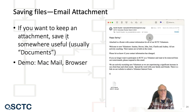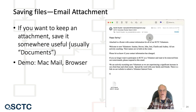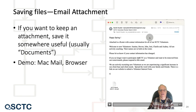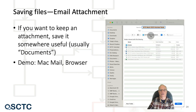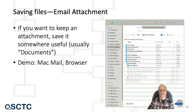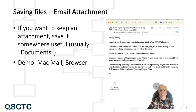Similar to browser downloads, email attachments need to be saved somewhere useful — generally somewhere in your Documents folder — otherwise they just get stored in Downloads. With Mac OS Mail, it will always prompt you where to store an attachment. You click the Save button, the save dialog comes up, you tell Mail where to save it, and it's saved.